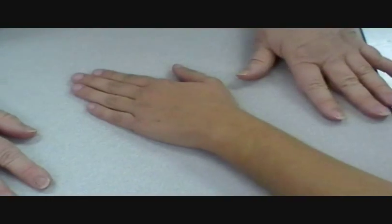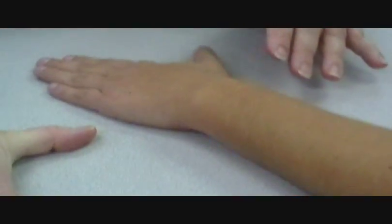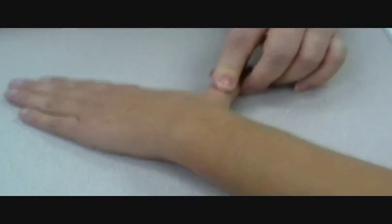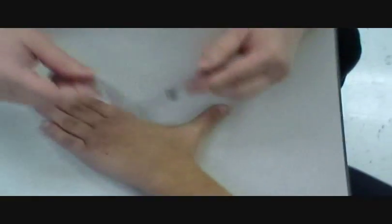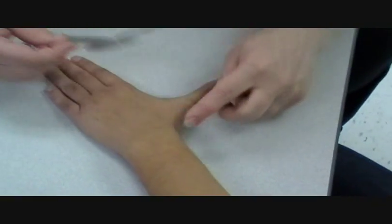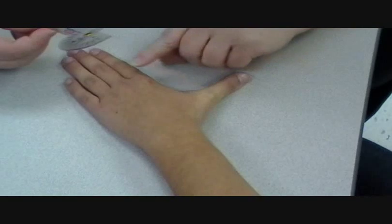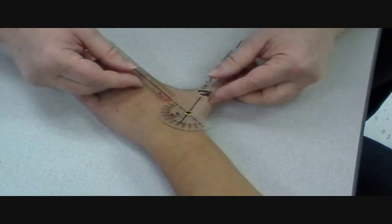Okay, so now we're going to do thumb. So I want you to spread your thumb out this direction as far as you can. So this would be radial abduction of the thumb. So you're going to line up with the metacarpal in the thumb and the metacarpal of the index finger.